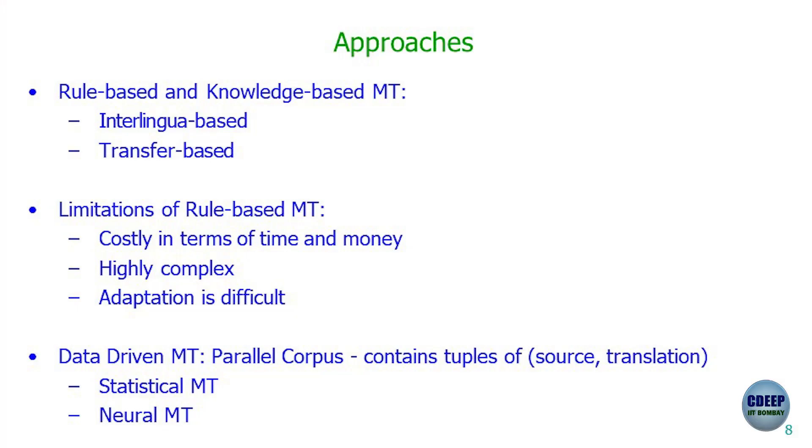Data-driven approaches — starting with statistical MT around the year 2000 — became famous. What we need for these approaches is lots and lots of parallel text. Parallel text means a set of tuples where each tuple has a source sentence and its corresponding translation in the target language.